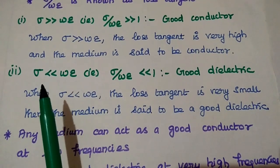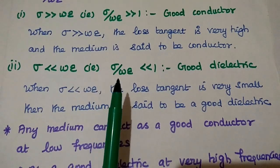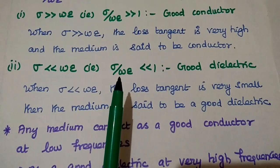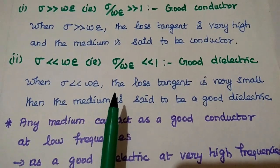When the conductivity is much less than omega epsilon, that is, the ratio sigma by omega epsilon (the loss tangent value) is very small, the medium can act as a good dielectric.